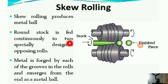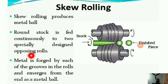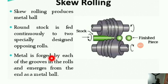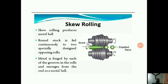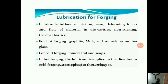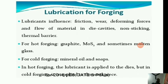Skew rolling produces metal balls. Round stock is fed continuously to two specially designed opposing rolls, and metal is forged by the grooves in the rolls and emerges from the end as a metal ball. You should take note: skew rolling is used to produce metal balls.